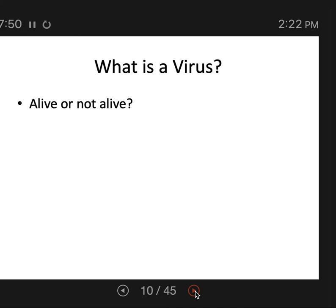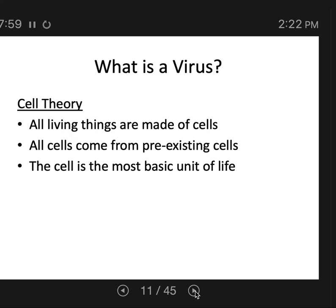What is a virus? Is it alive or not alive? It's not alive. Remember cell theory: all living things are made of cells, all cells come from preexisting cells, and the cell is the most basic unit of life. The reason for the cell as the cutoff for life is that you need to have a membrane — a cell membrane — to maintain an internal environment conducive to life, that is homeostatic and different from the external environment. You need a membrane to carry equipment for life-giving functions such as reproduction or metabolism. In other words, the cell membrane provides self-sufficiency.